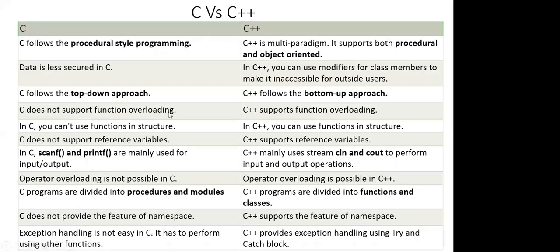C does not support function overloading; C++ does. Function overloading means the same function can be used by multiple classes at the same time. In C, you cannot use functions inside structures, but in C++ you can. C does not support reference variables, but C++ does.